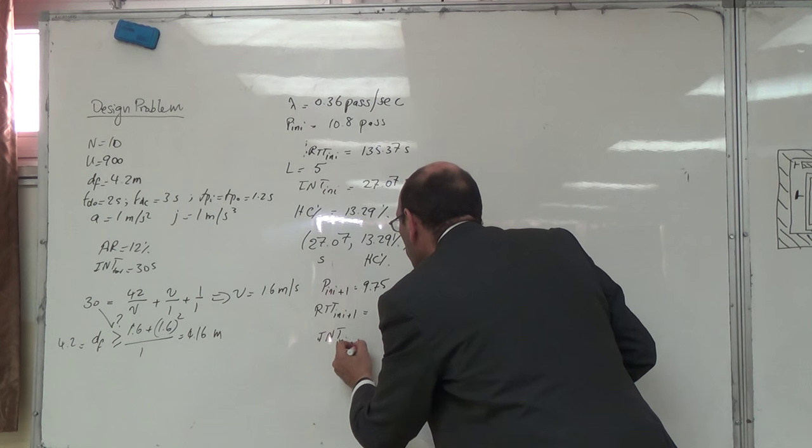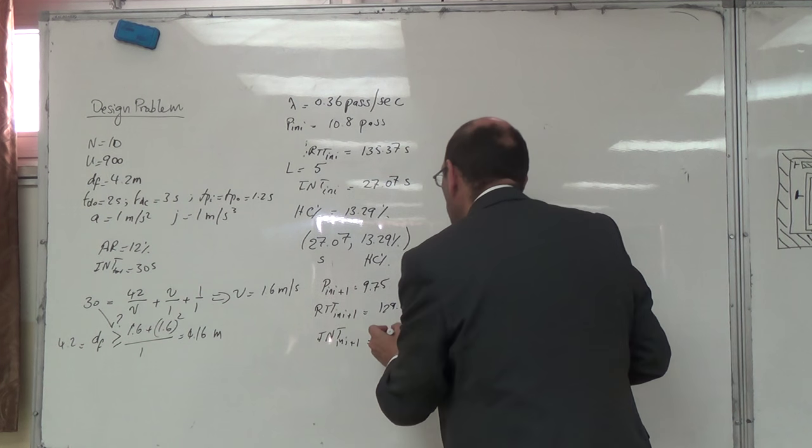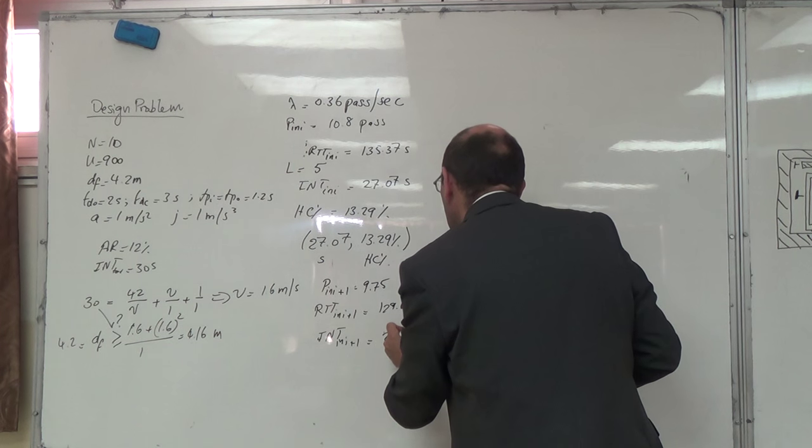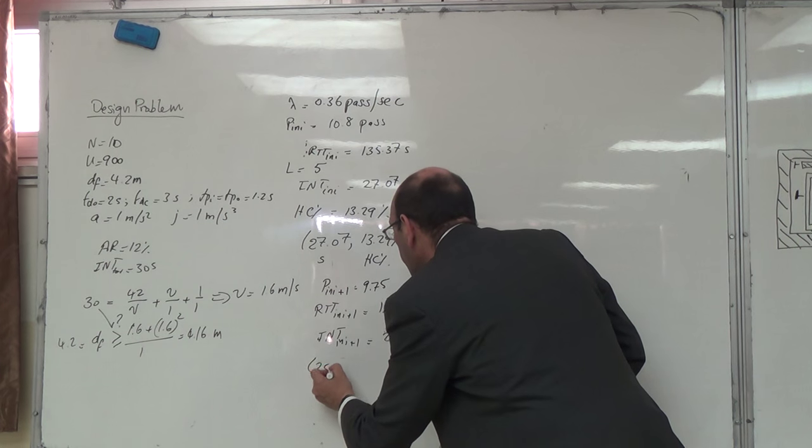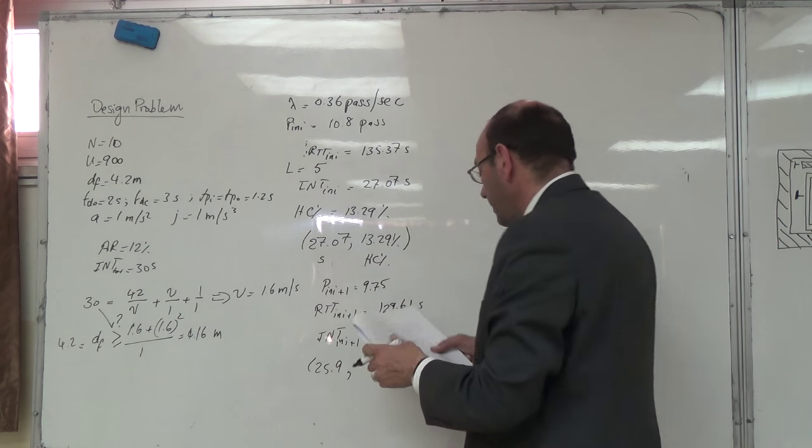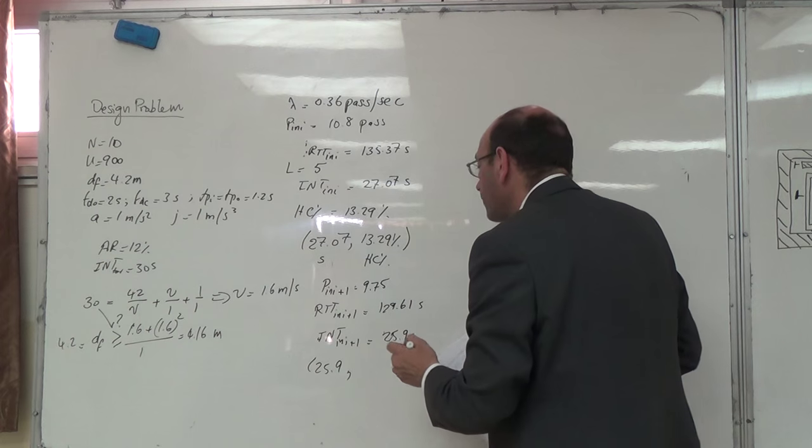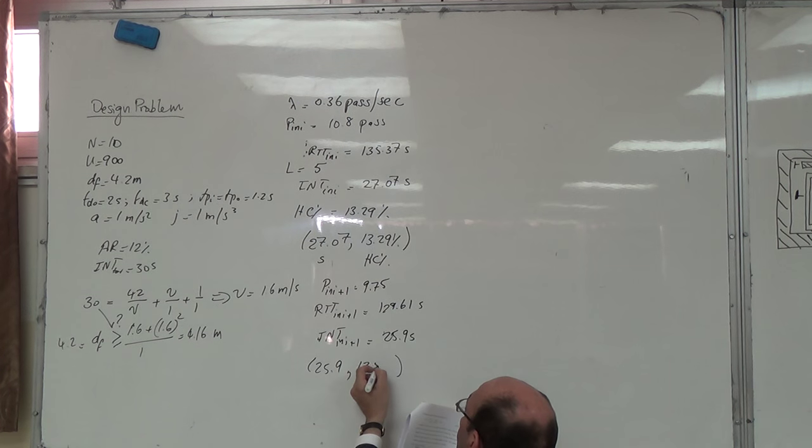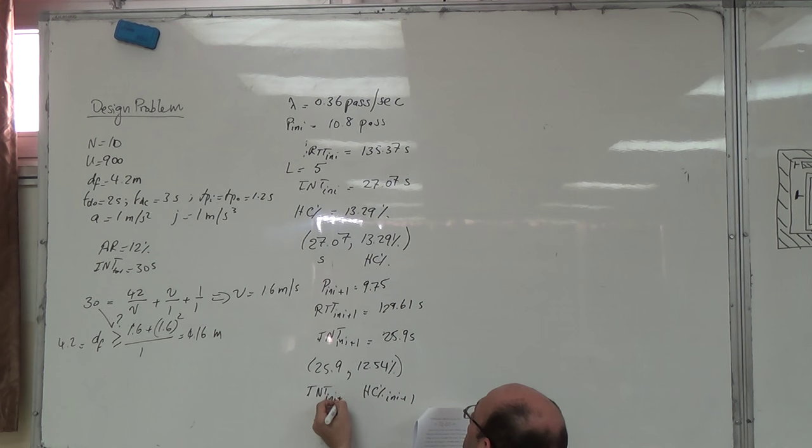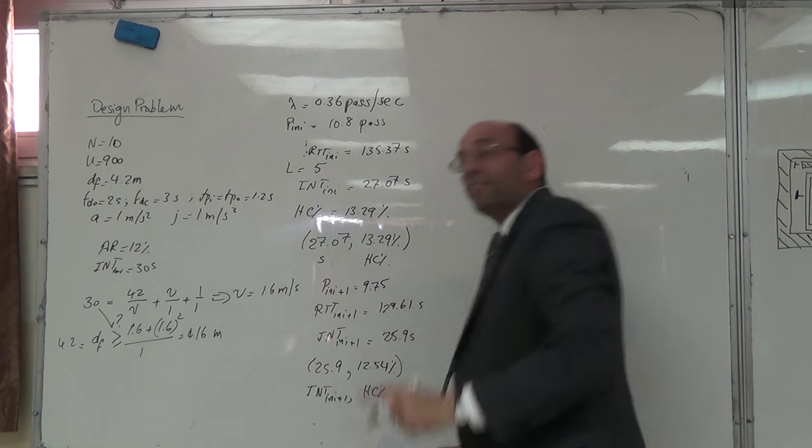يساوي 25.92 كان هون 27 صار 25.92 seconds. فالنقطة التانية على Hartnett plane صارت 25.9 والهالده كبستي بتطلع 12.54 كانت هون 13 وانتطلع معي 12.54% handling capacity initial plus 1.